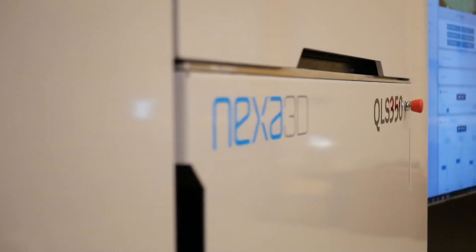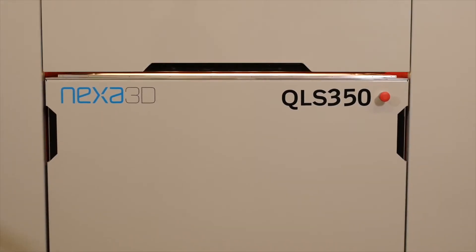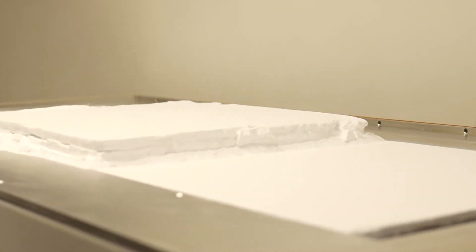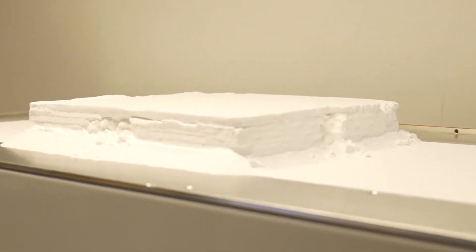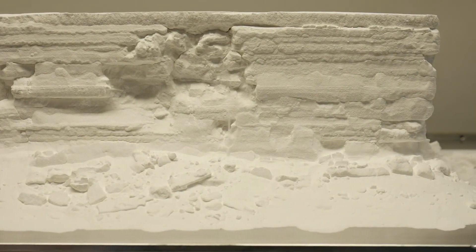Nexa 3D built the QLS350 SLS printer for industrial use with high productivity. The QLS350 is compatible with familiar and high temperature polymer powders, processing up to 240 Celsius, and it's 350 by 350 by 400 millimeter usable build volume.